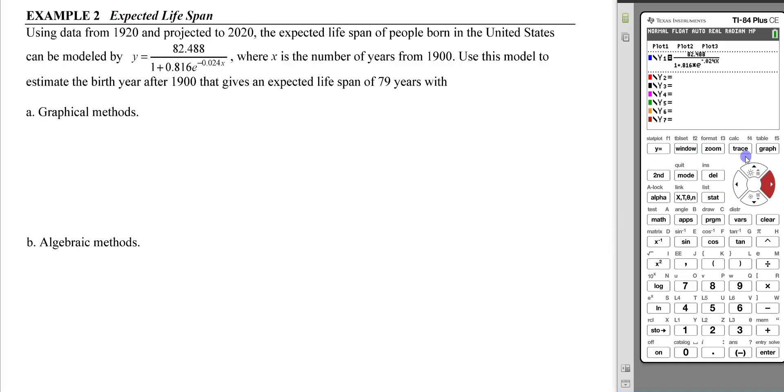If we graph this, we're looking at 79 years, and x is the number of years from 1900. Let's set our window from 0 to 150 and do a zoom fit. We want to see what year gives an expected lifespan of 79 years. That is a y value, so we'll make a second function y = 79. We see the intersection there, so we can calculate the intersection.